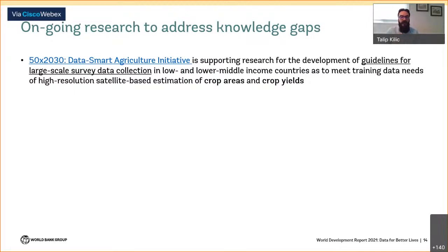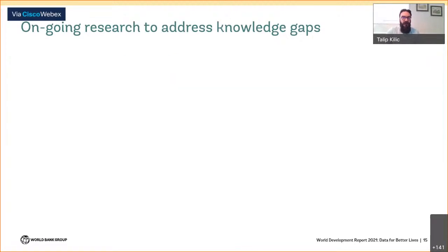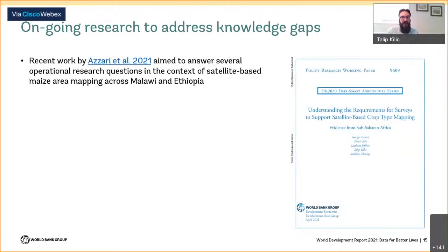Against that background, as part of the 50x30 initiative, we're conducting research to develop guidelines for large-scale data collection in low and lower middle-income countries to meet training data needs for high-resolution mapping of crop areas and yields. The research is focused in the immediate term on Cambodia, Ethiopia, Mali, Malawi, and Uganda, on cereal crop area mapping and yield estimation. The guidelines we're aiming to develop by June of next year will help analysts assess the utility of existing survey data for downstream earth observation applications.